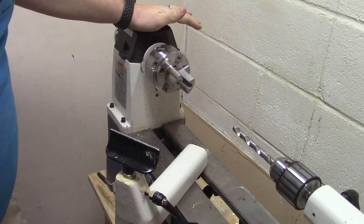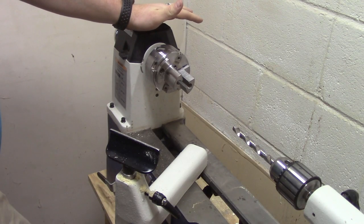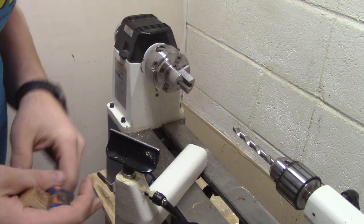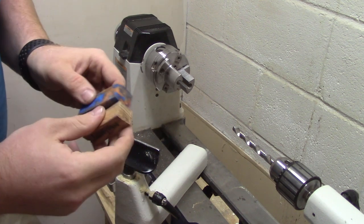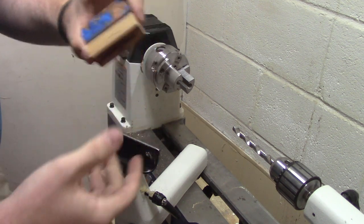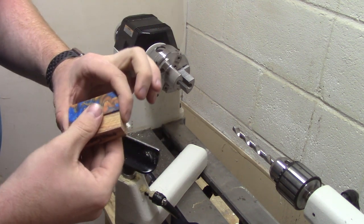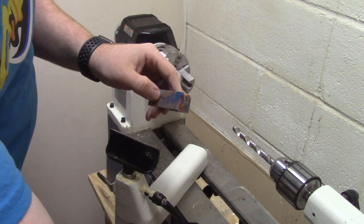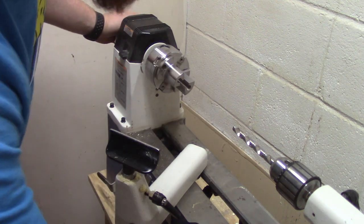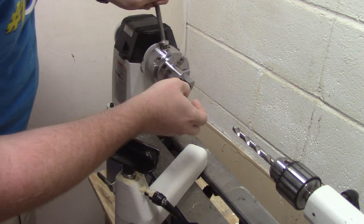We're over at the lathe now and we are ready to drill out our blanks. The way we drill out our blanks will be the same for resin and wood. I have my blanks down to size since we just cut them at the band saw. Now what I'm going to do is put these blanks into my chuck here, one at a time obviously.